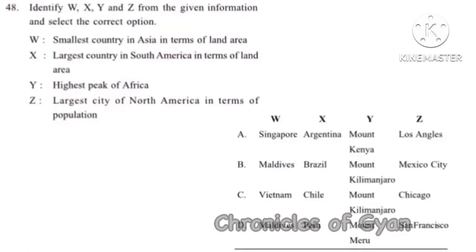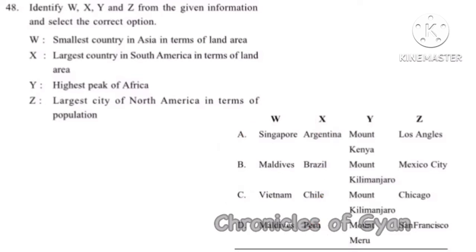Question 48: Identify W, X, Y and Z from the given information and select the correct option. W is the smallest country in Asia in terms of land area — the answer is Maldives, an island nation with approximately 298 square kilometers. X is the largest country in South America in terms of land area — the answer is Brazil, with almost 8.5 million square kilometers. Based on these, options A, C, and D can be eliminated, so the correct option is B.